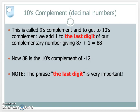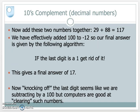Notice this phrase: we add the number 1 to the last digit — that is very, very important. So we've got two numbers now: the original number 29, and the 10's complement of minus 12, which is 88. Add them together and we get the answer 117. And remember we've effectively added 100 to our minus 12. So the final answer is achieved by the following algorithm: if the leading digit is a 1, get rid of it. It is, so get rid of it — the answer is 17.